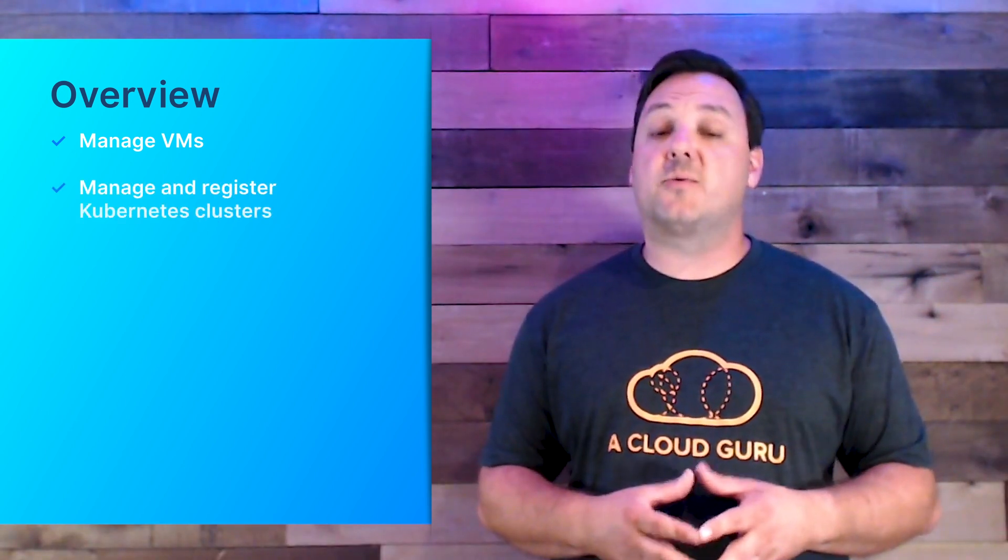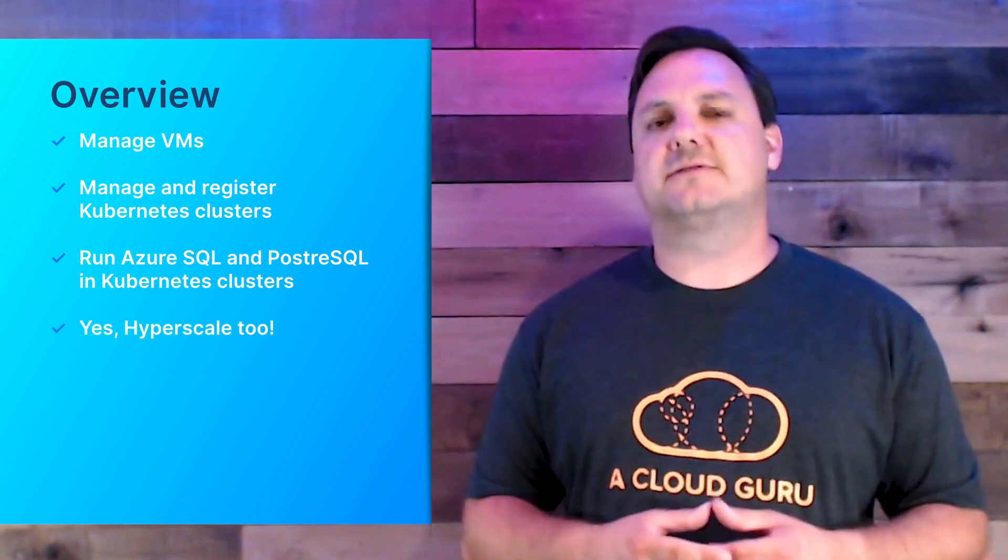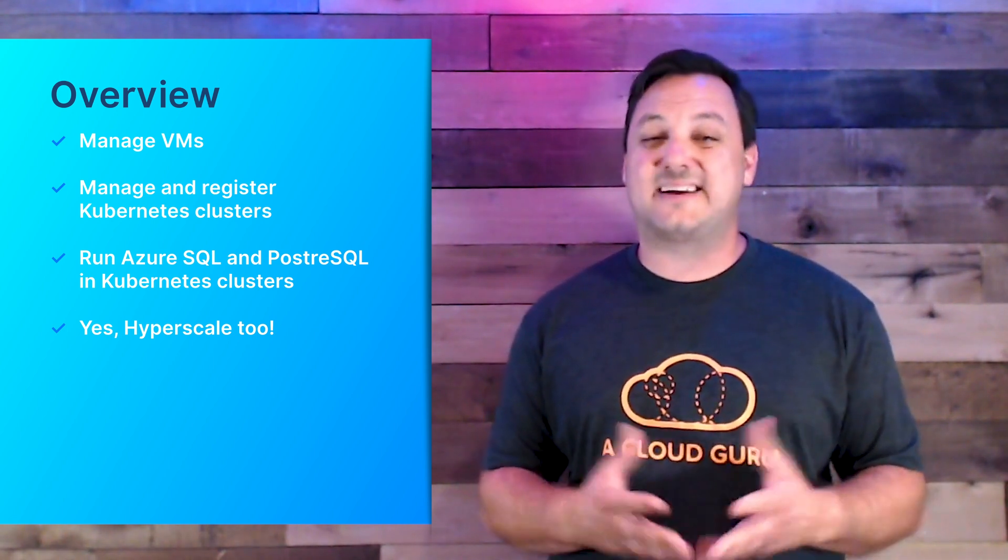In its current state, Azure Arc delivers three capabilities — well, two of the three capabilities, but we'll talk about that more in a minute. With Arc server management, you can manage virtual machines and physical machines running outside of Azure, whether on-prem or with other cloud providers. You can also manage and register Kubernetes clusters regardless of where they're located. Finally, you can run and manage Azure SQL and PostgreSQL, including hyperscale and Kubernetes clusters outside of Azure. Unfortunately, at the time of this filming, this last feature is in preview and requires a signup form to request access.